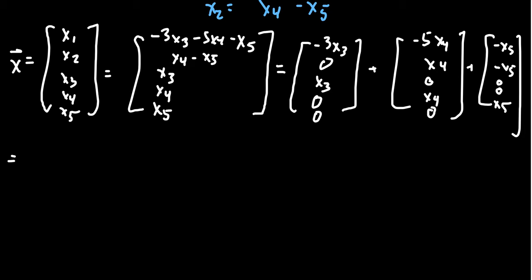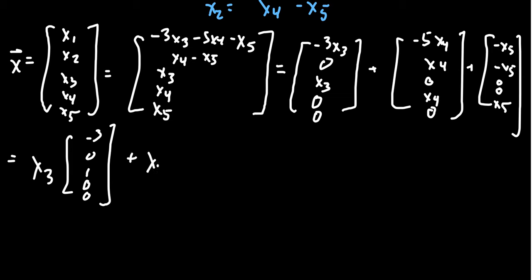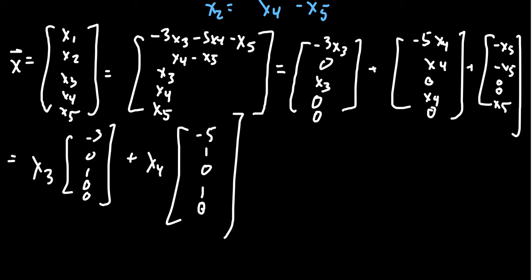Now factor out the free variables. For the first one, factor out x3, and this gives us the vector: negative 3, 0, 1, 0, 0. For the next one, factor out x4, and that leaves behind: negative 5, 1, 0, 1, 0. And then for the last one, factor out x5, and that gives you: negative 1, negative 1, 0, 0, 1.